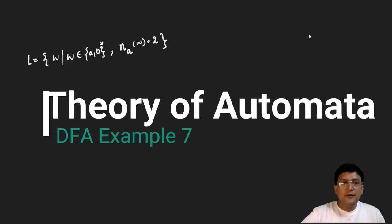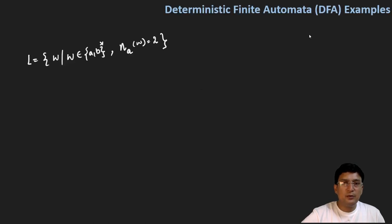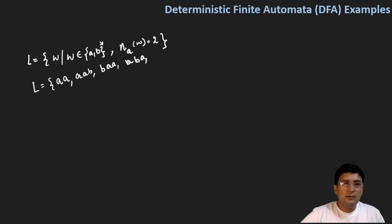Let's design a DFA for a language where the number of A's is equal to two. The language can contain both A and B, but the number of A's in the string must be exactly two. For example: AA, AAB, BAA, ABA, or AABB — all strings in which the number of A's is exactly two.